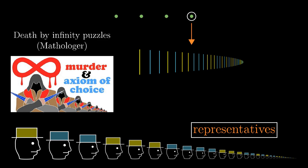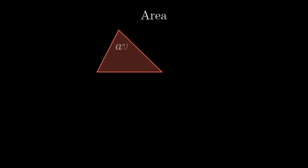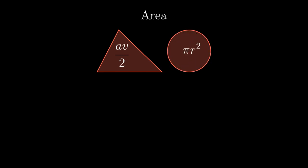And now let's take a look at another example closer to real mathematics. In mathematics, we often assign an area to a geometrical object. The area of a triangle is half the base times the altitude, the area of a circle is pi r squared.